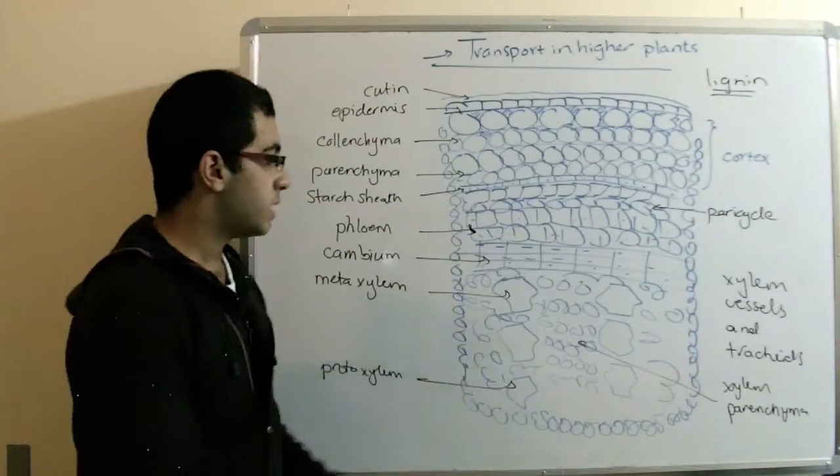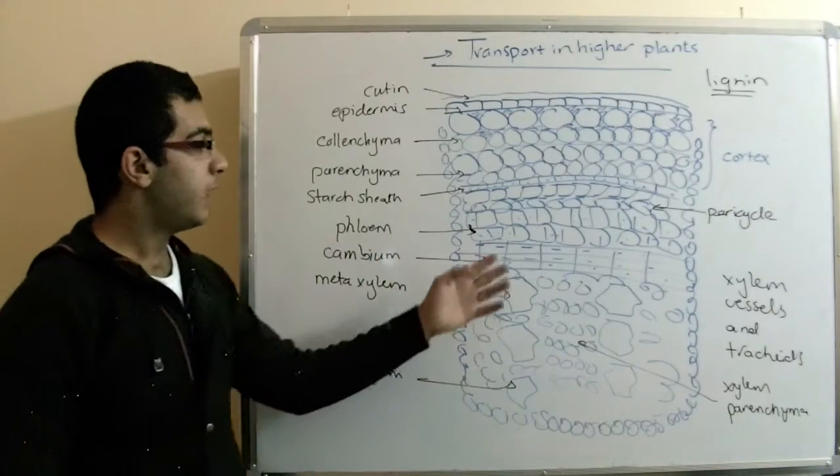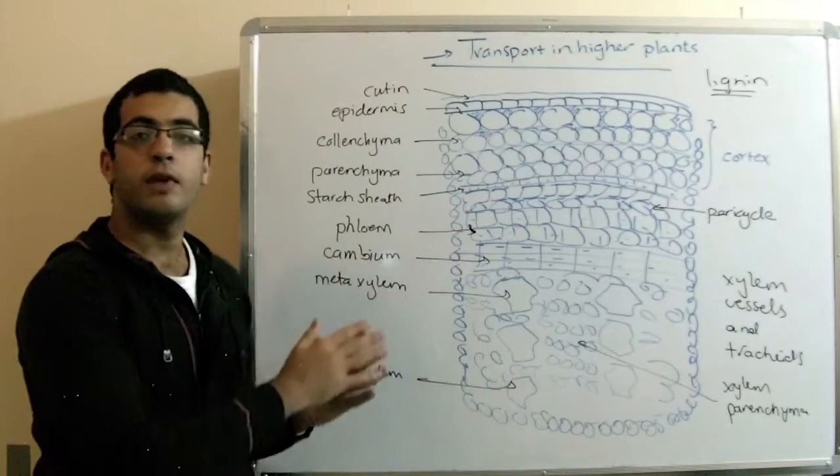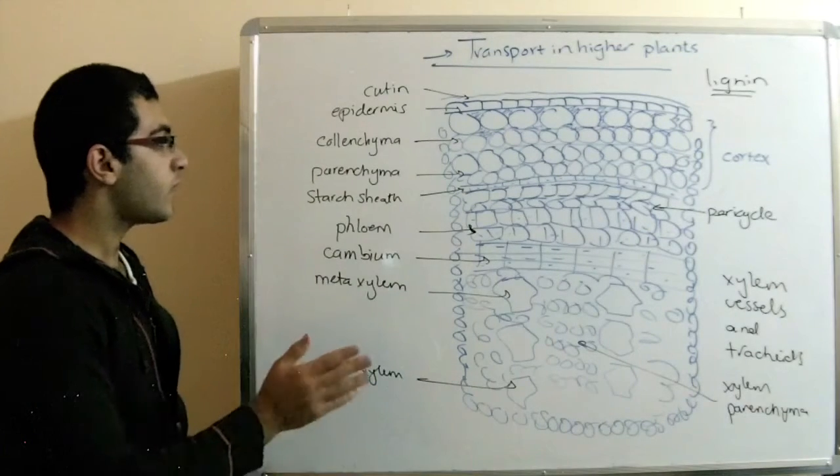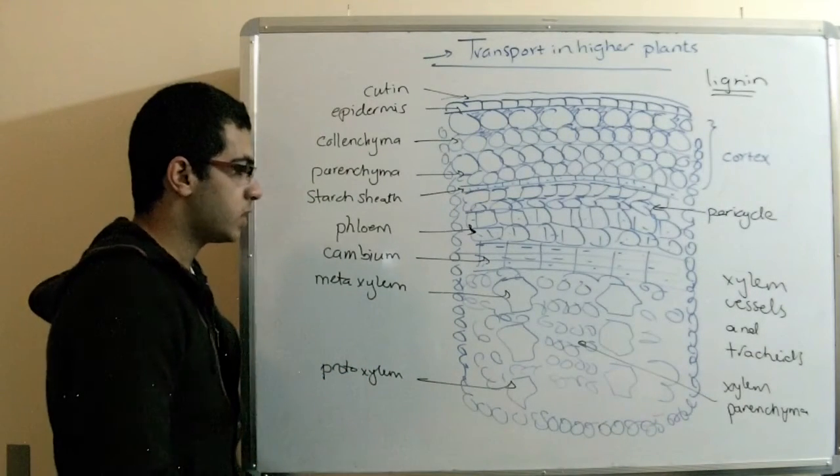Also, the parenchyma cells all over the plant help in the connection between the phloem tissues inside the stem and the phloem tissues in the other parts of the plant.